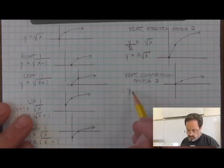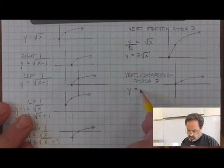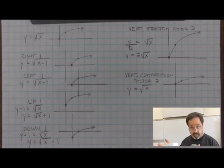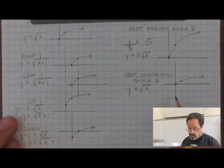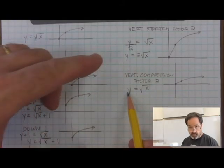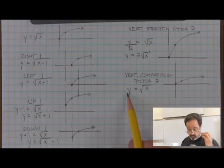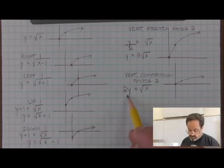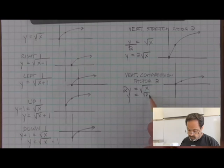How do we modify the equation for vertical compression? The parent function is y equals radical x. There's always a counterintuitive idea between the description and how we affect the equation. Vertical compression is a vertical effect, so we modify the vertical variable y. If we want to compress and we think of shrinking, in order to do that we multiply y by two. Solving for y, we divide both sides by two and get y equals radical x over two.